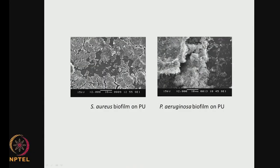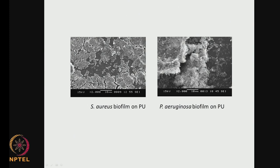These are scanning electron microscopy pictures of a Staphylococcus biofilm on polyurethane surface, and this is a Pseudomonas aeruginosa biofilm on a polyurethane surface. You can see not only the bacteria but also the exopolysaccharides — it forms a thick layer. So many materials in different environments end up having biofilm. For example, central venous catheters made up of polyurethane, where the environment is blood, can still have Staphylococcus epidermis, Staphylococcus aureus, Pseudomonas, or Klebsiella type of biofilm.